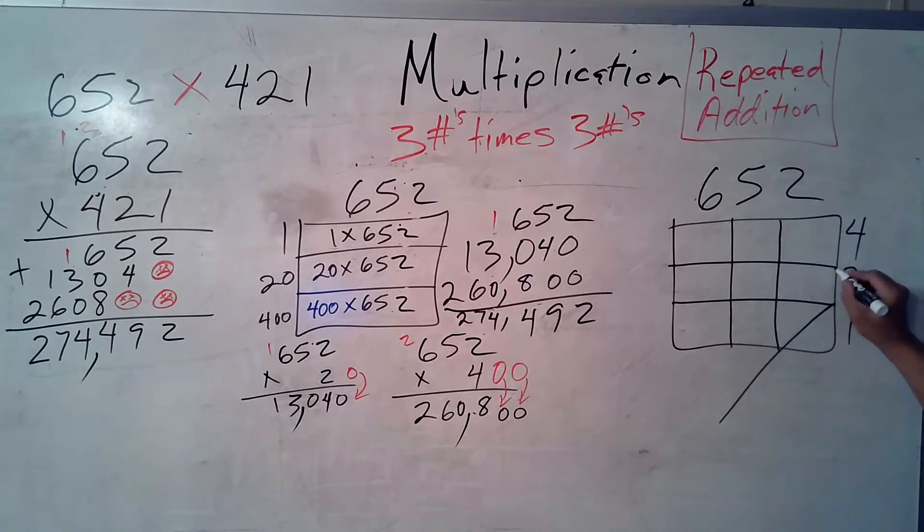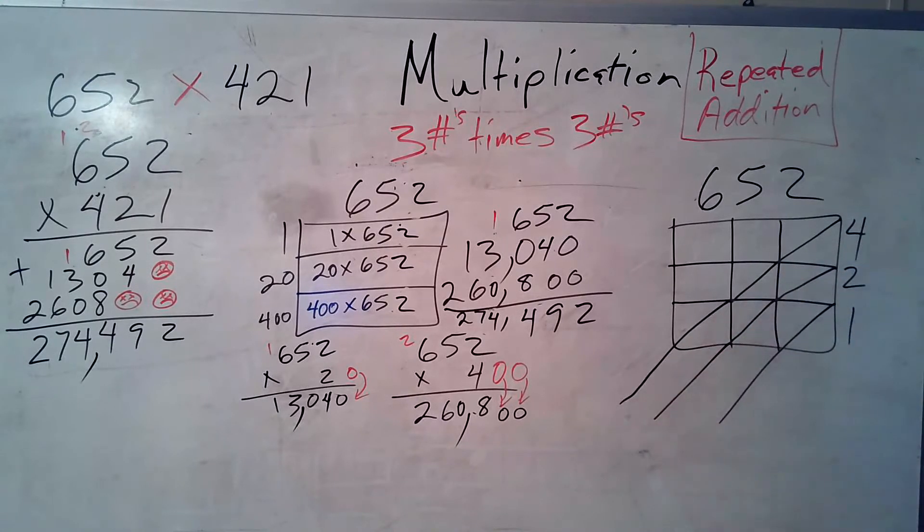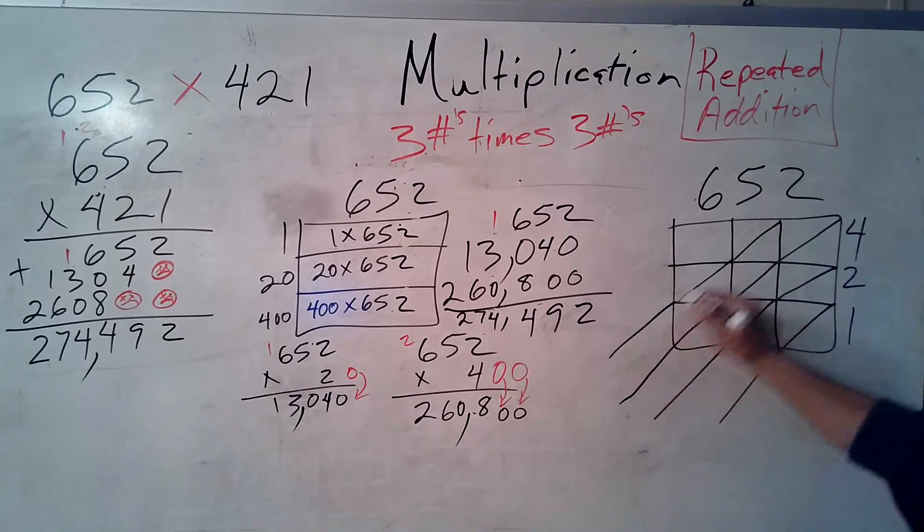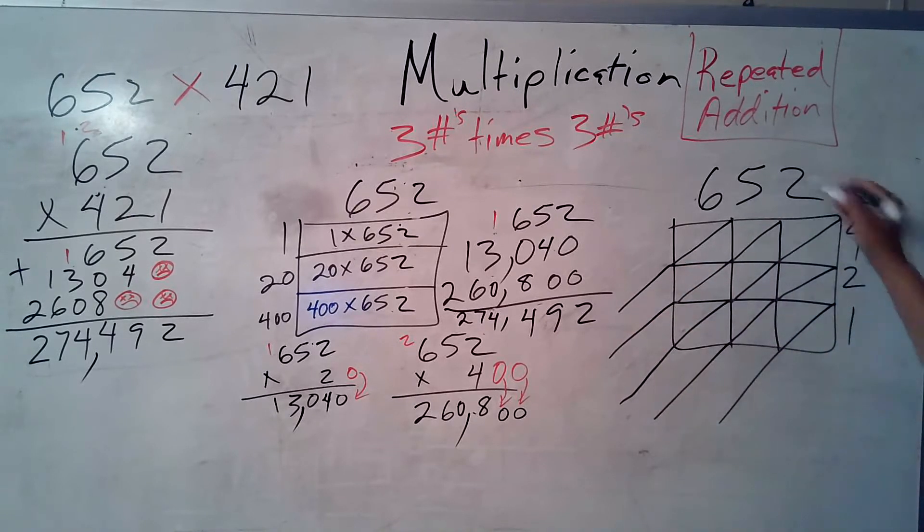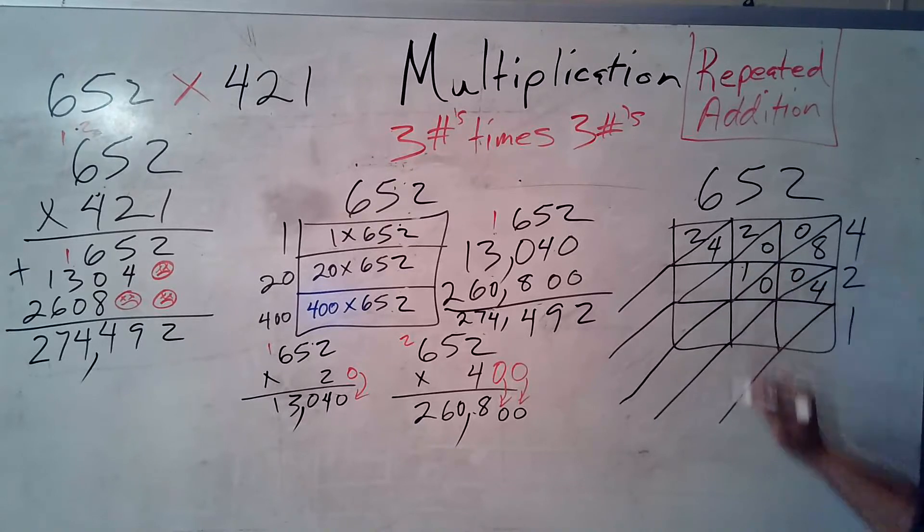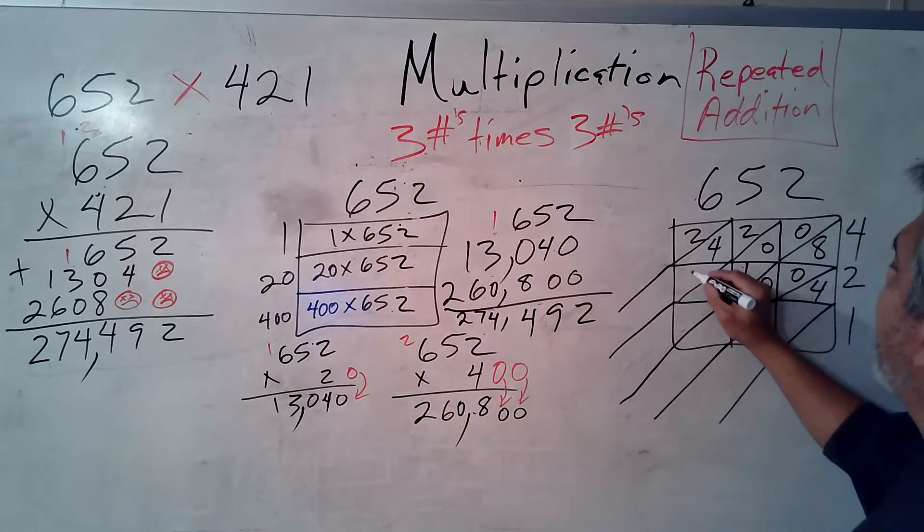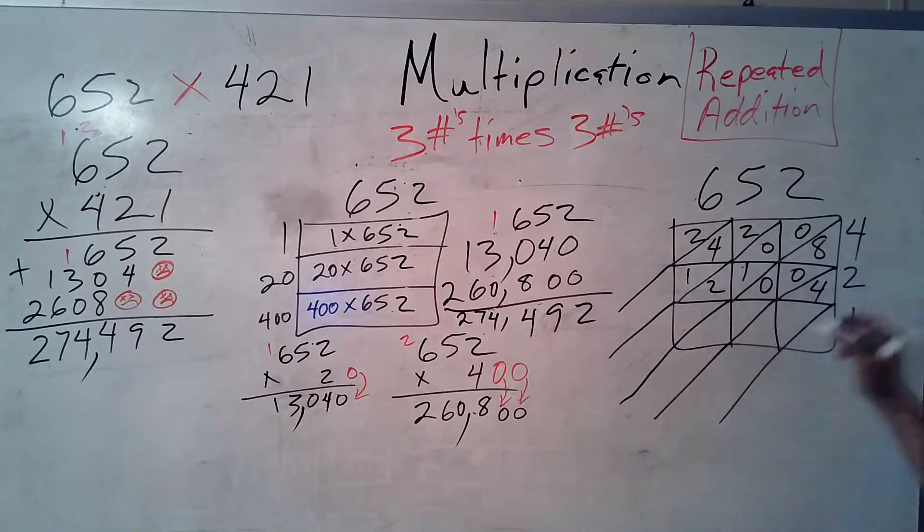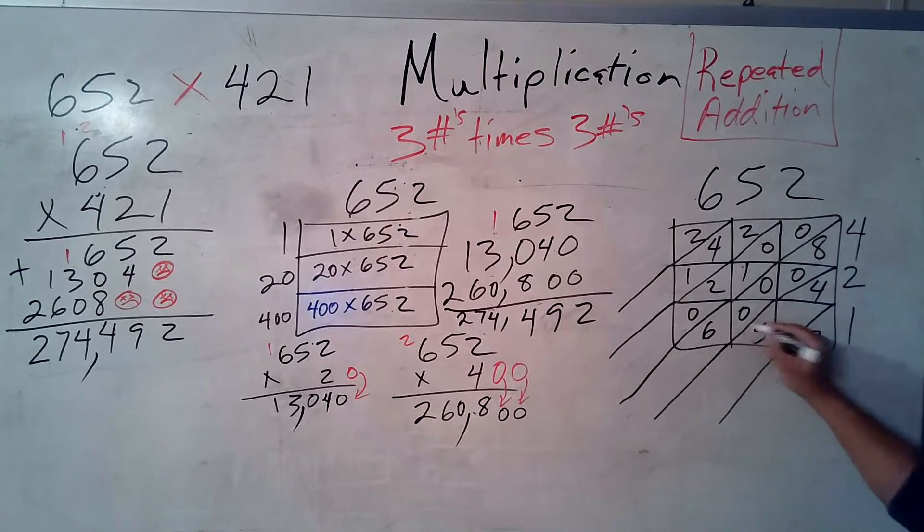Yep. Corner, corner, down. Corner, corner, corner, down. Corner, corner, corner, corner, down. Corner, corner, corner, down. Corner, corner, down. 2 times 4 is 8. 4 times 5 is 20. 6 times 4 is 24. 2 times 2 is 4. 2 times 5 is 10. 2 times 6 is 12. 1 times anything is that anything. So I'm going to write 6, 5, 2. I'm going to put a 0, 0, 0. All right.